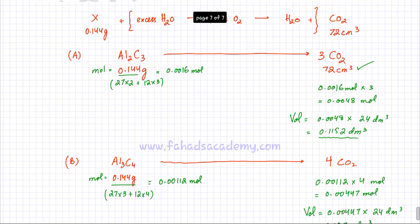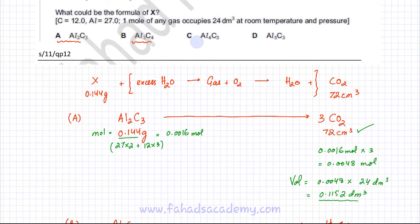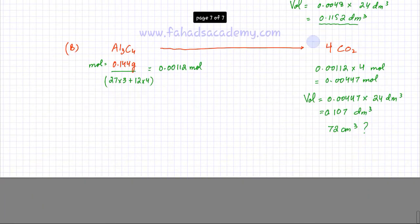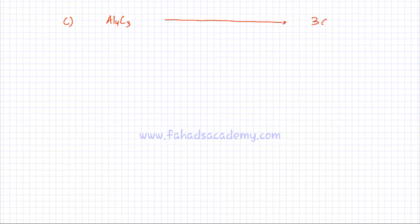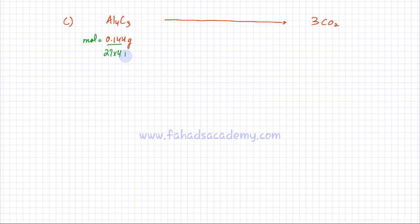Now moving to option C, which is AL₄C₃. This compound has three carbons, so it will produce three CO₂ molecules per formula unit. Moles of AL₄C₃ = 0.144 ÷ (27×4 + 12×3) = 0.144 ÷ (108 + 36) = 0.144 ÷ 144 = 0.001 moles.